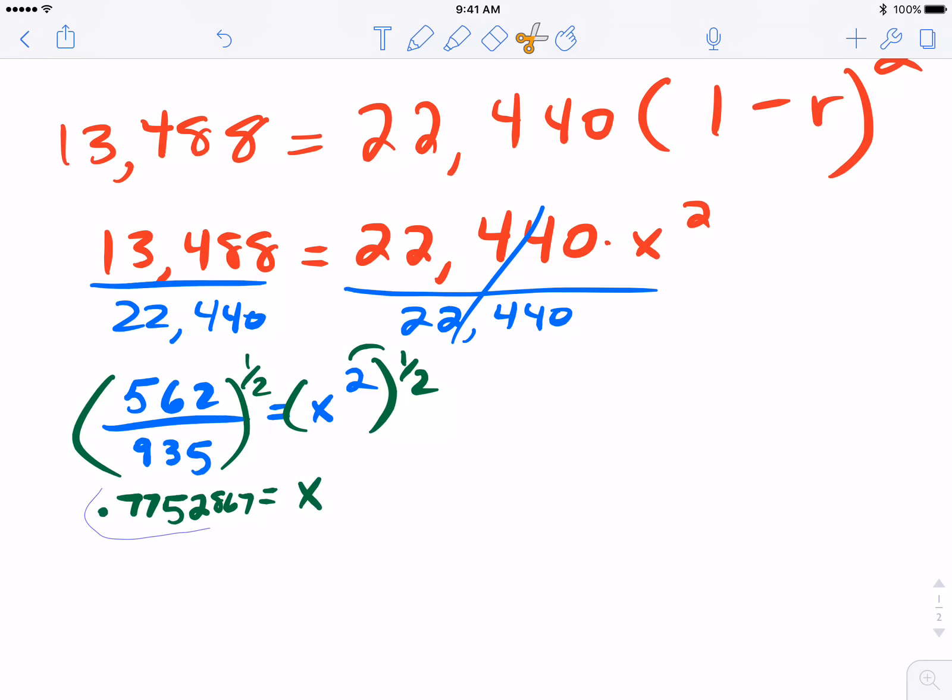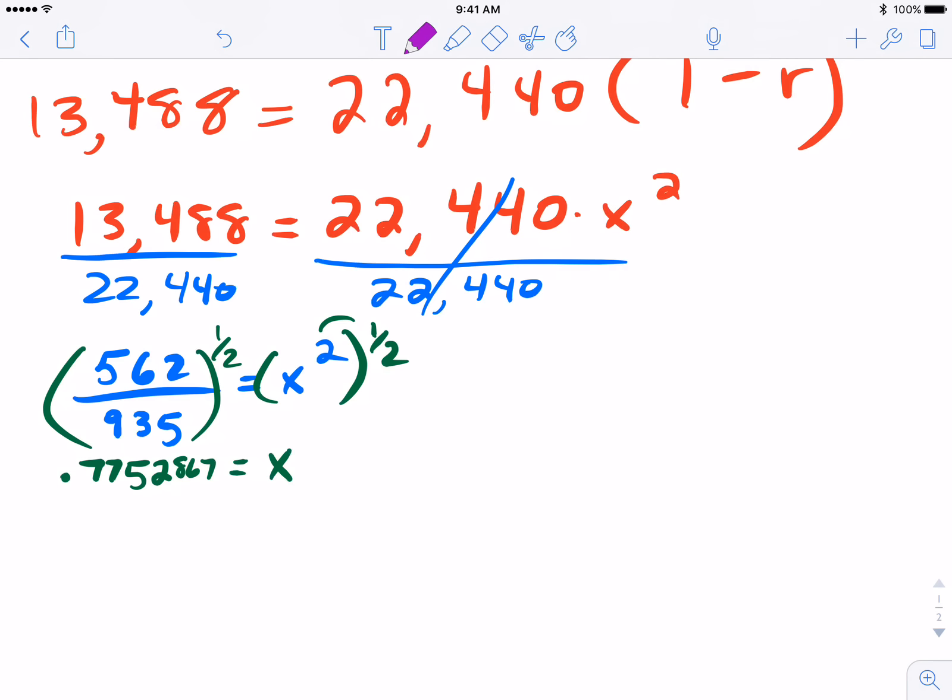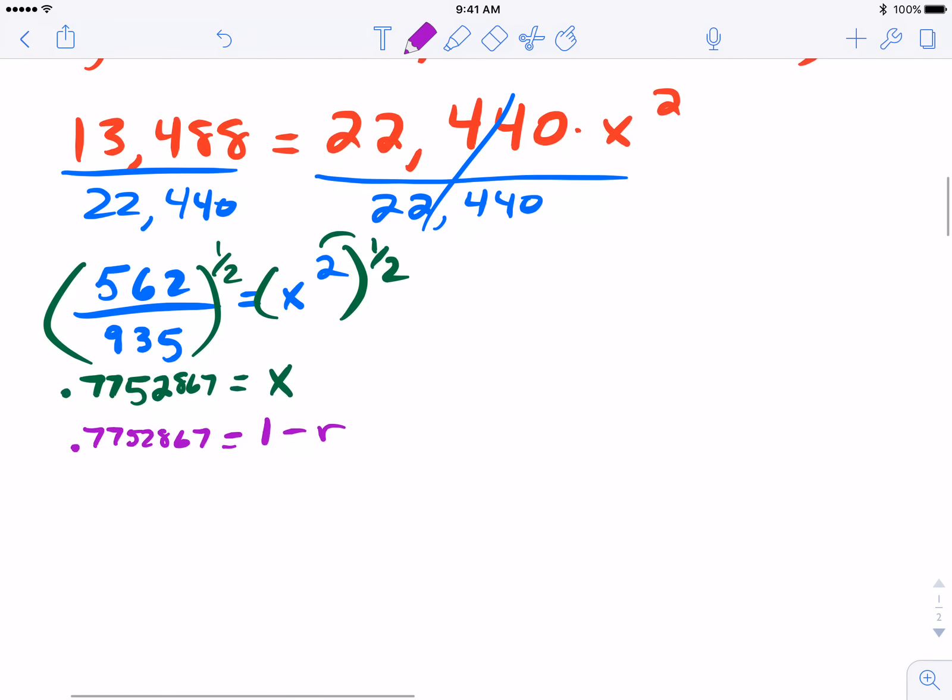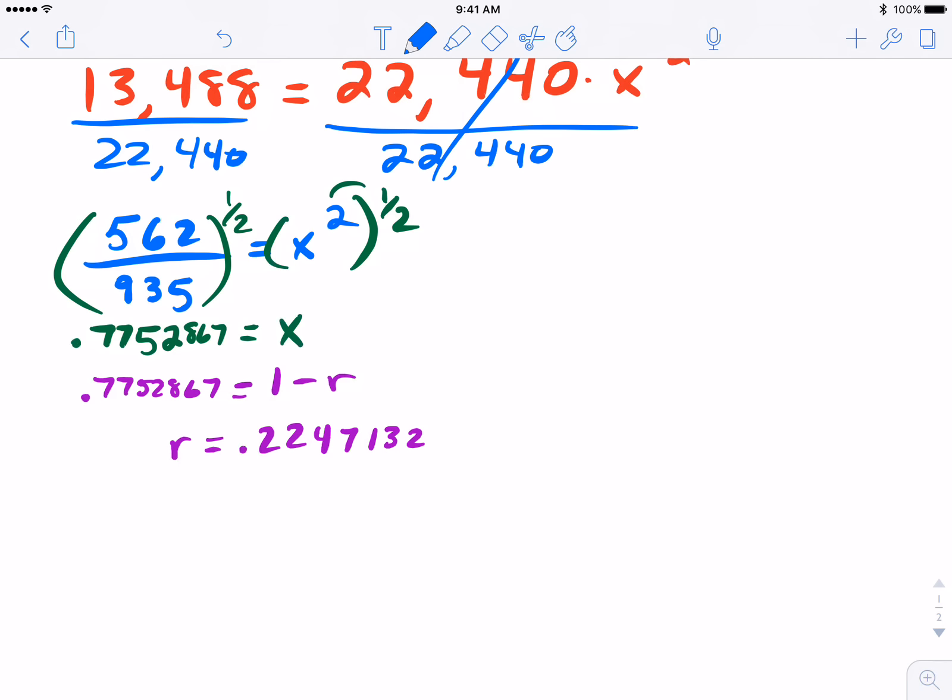So what does that mean? Well we've solved for x, but if we remember we called x one minus r. So let's bring that back into the picture: 1 - r = 0.7752867. Now if you want to identify what the rate is, we're simply saying something was subtracted from one, so we could do 1 minus that 0.775... Again using a calculator here you'll get r equals 0.2247132. So that's a decimal rate. As an actual percentage we're looking at 22.47 percent.